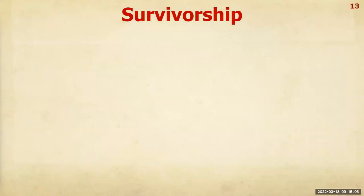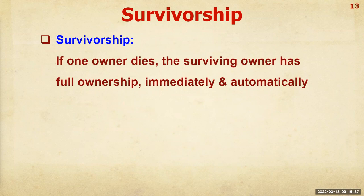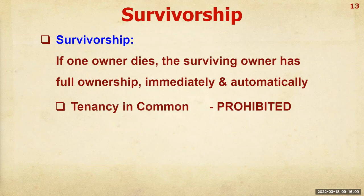Before we get into the three different kinds individually, I want to discuss survivorship. If one owner dies, the surviving owner has full ownership immediately and automatically. Survivorship is not inheritance — it doesn't have to go through probate and it's not taxed. You don't even have to do any paperwork. In reference to the three forms of concurrent ownership: tenancy in common cannot have survivorship — the law prohibits it.